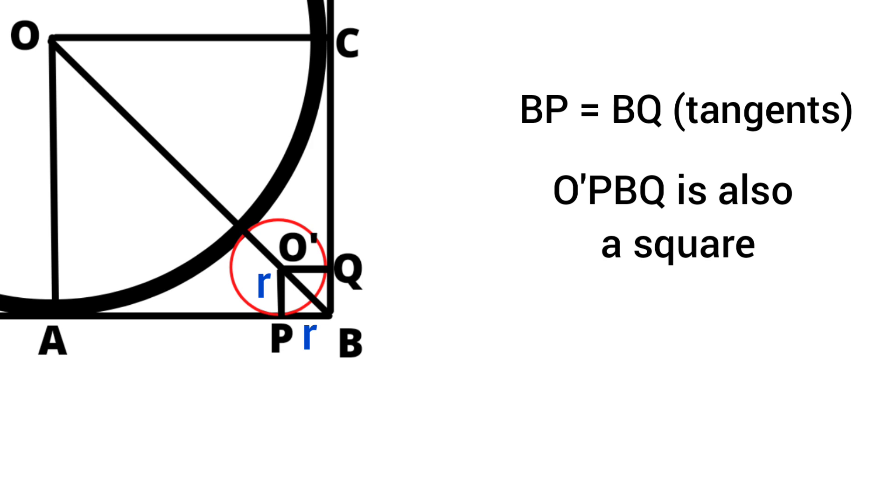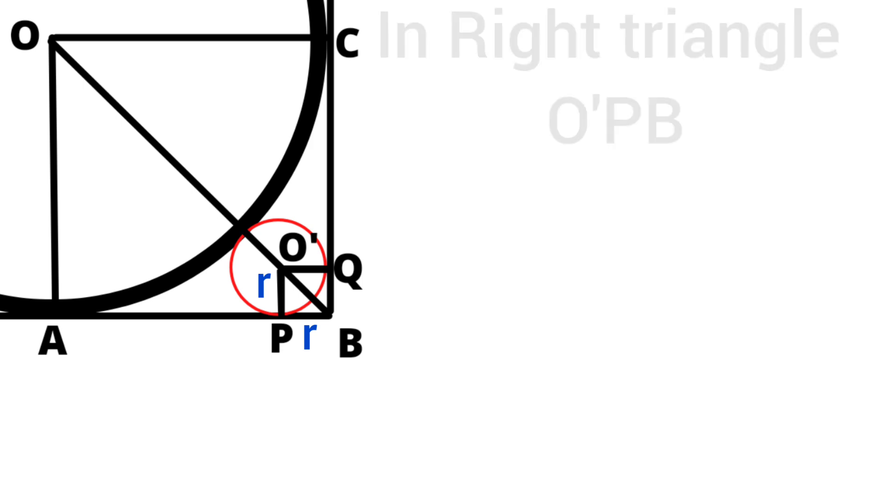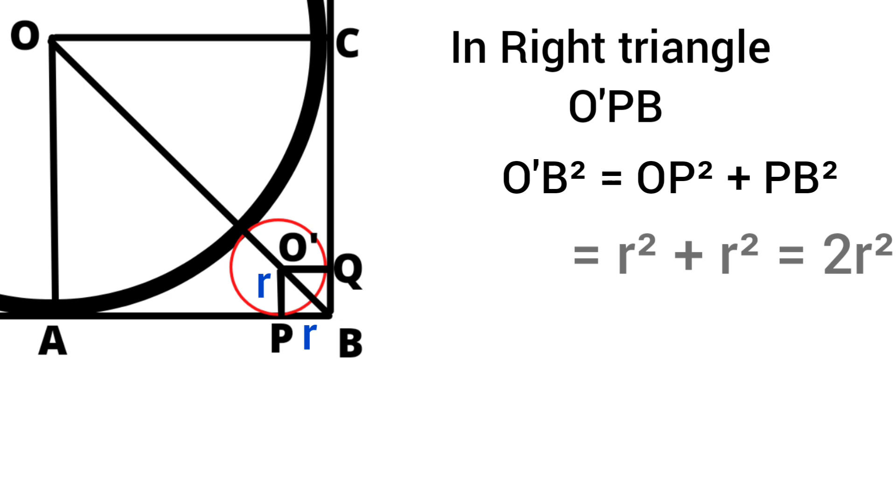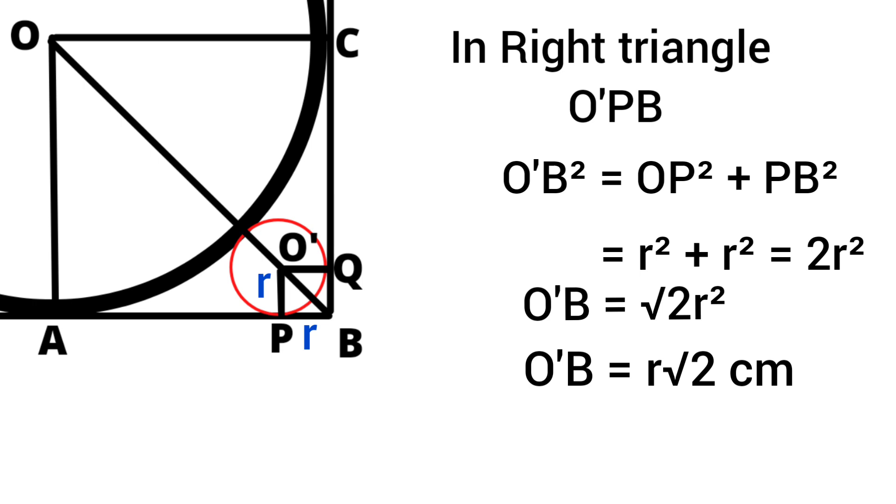Then by Pythagoras theorem, we can write O'B² equals OP² plus PB². Length of OP is R and the length of PB is also R. So R² plus R² equals 2R². O'B equals √(2R²). So the length of O'B equals R√2 cm.